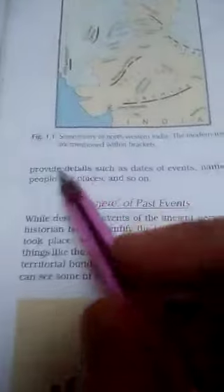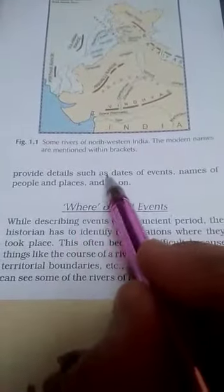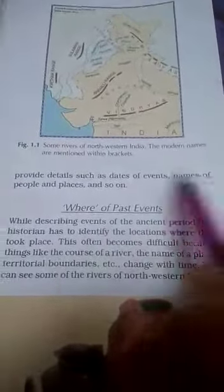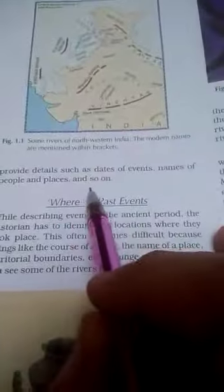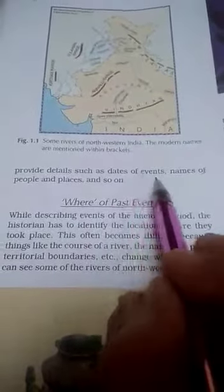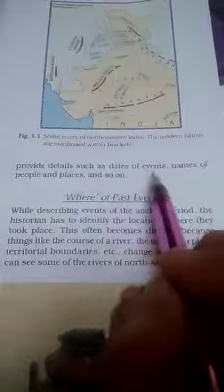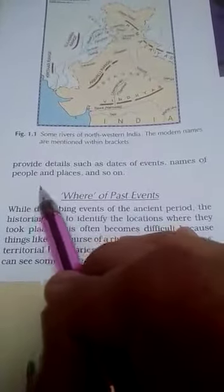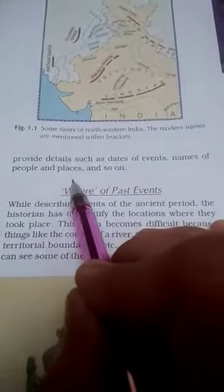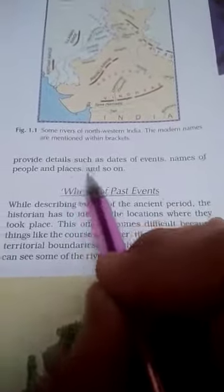The written records provide details such as dates of events, names of people and places, and so on. Joh joh ghatnaayein hui hain unki dates, unke peoples ke kya naam the, kis community ke the, aur woh ghatna kis jagah par hui — yeh sab written records se milta hai.